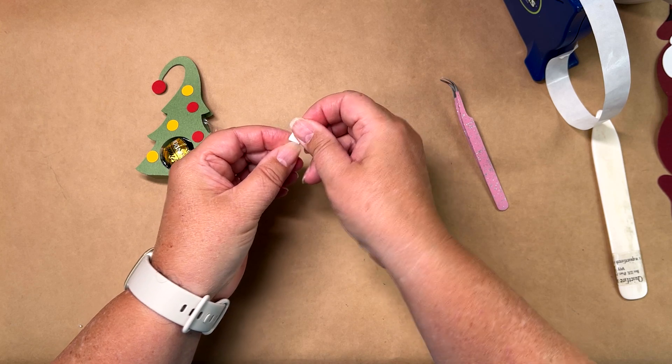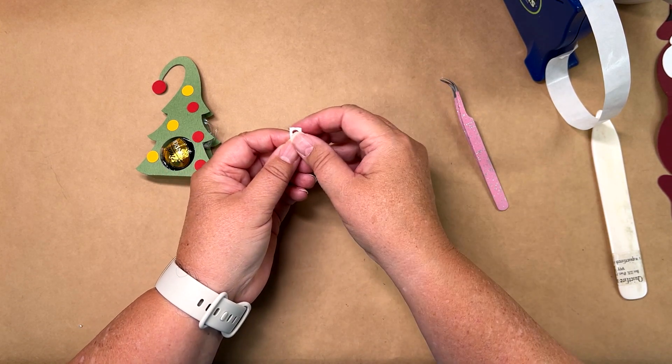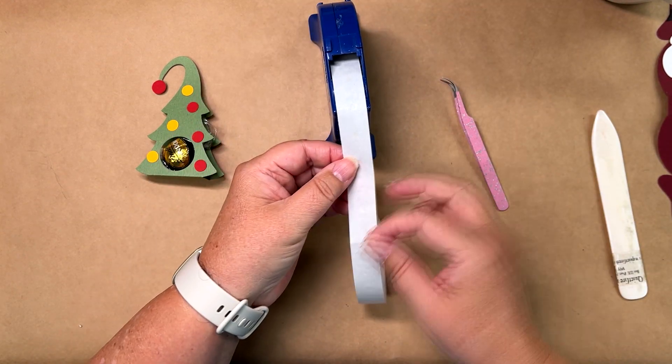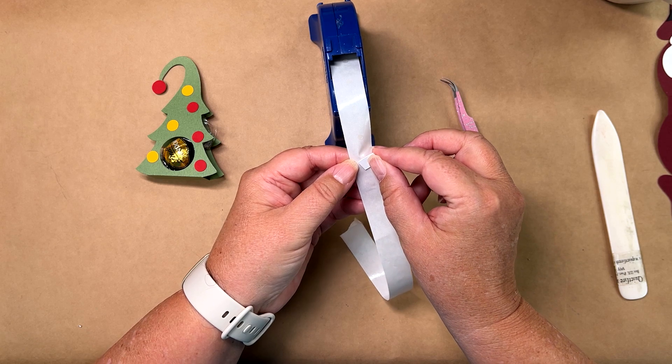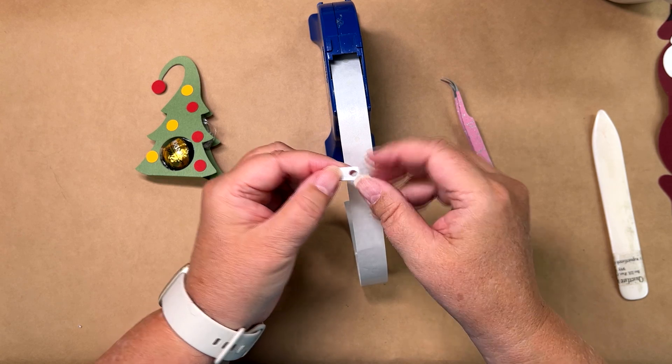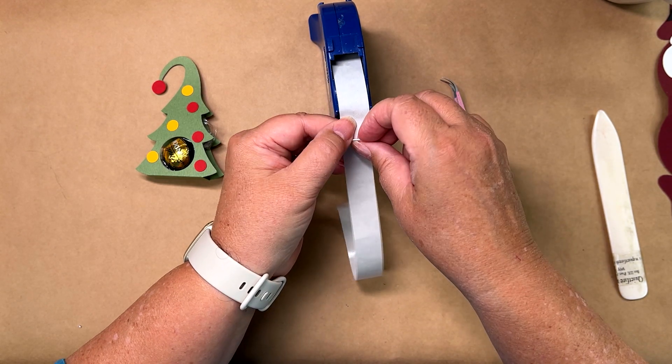And that's it. And then put a ribbon through it or thread through it if you want to. And I just use glue dots on either side. I don't know, you might want to glue this in place. I haven't tested it to see how strong it is.